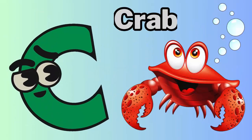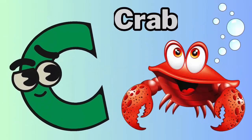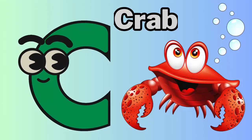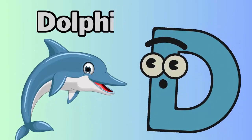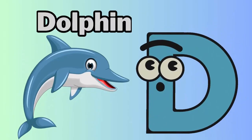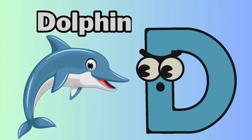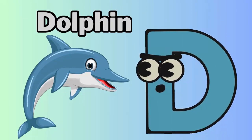C is for crab. Kuh, crab. D is for dolphin. Juh, dolphin.